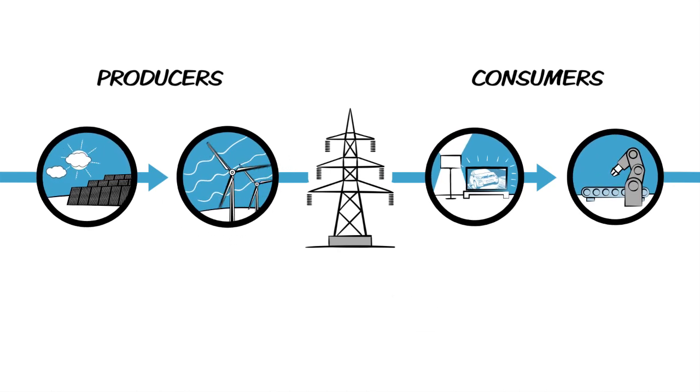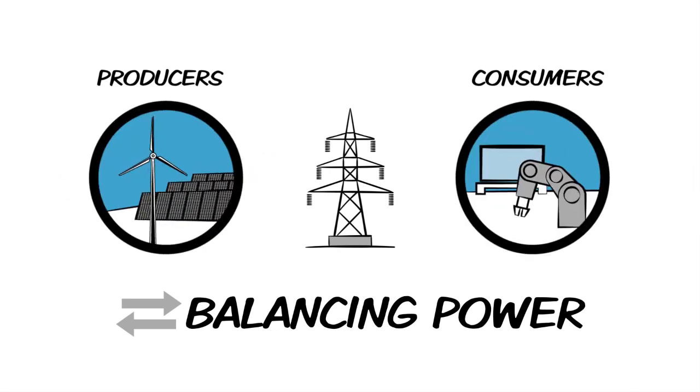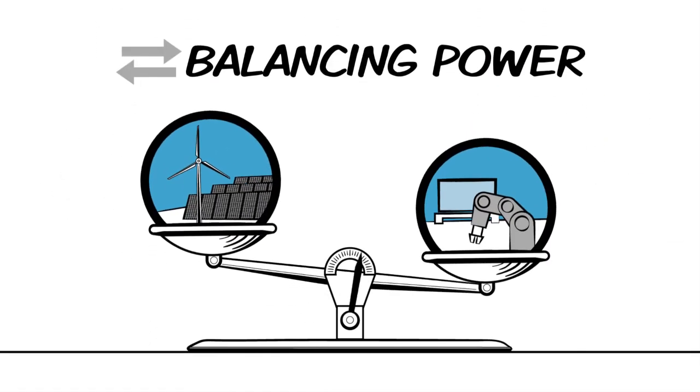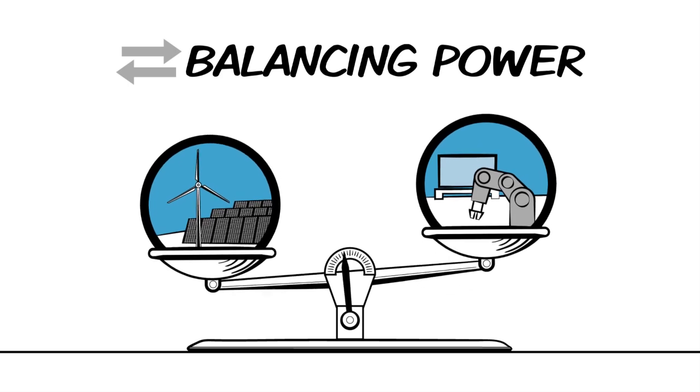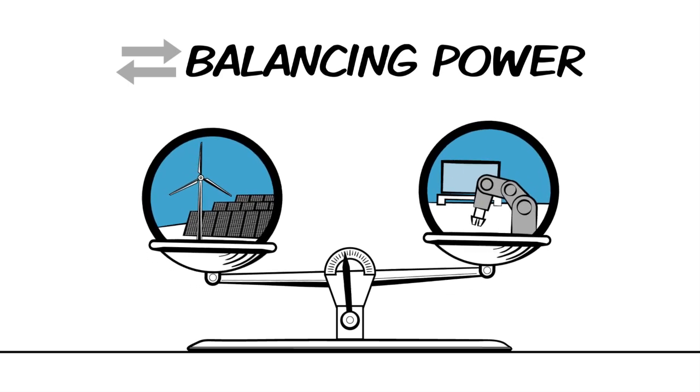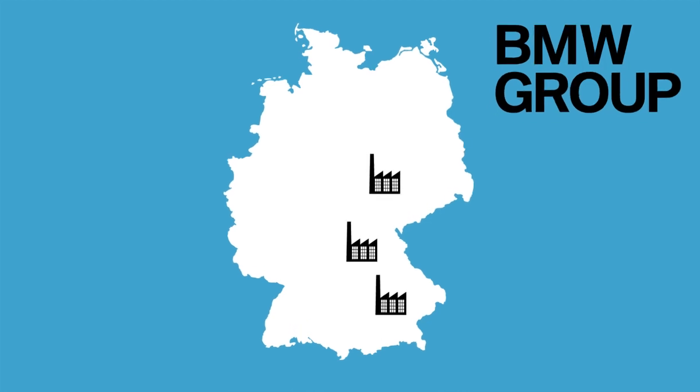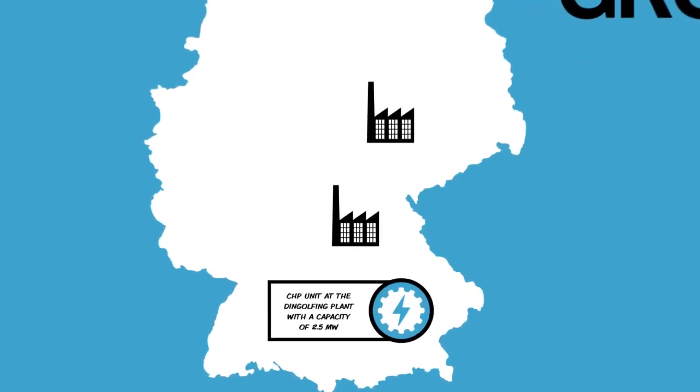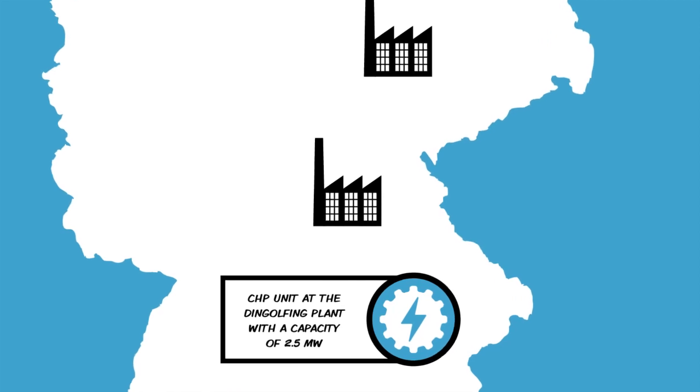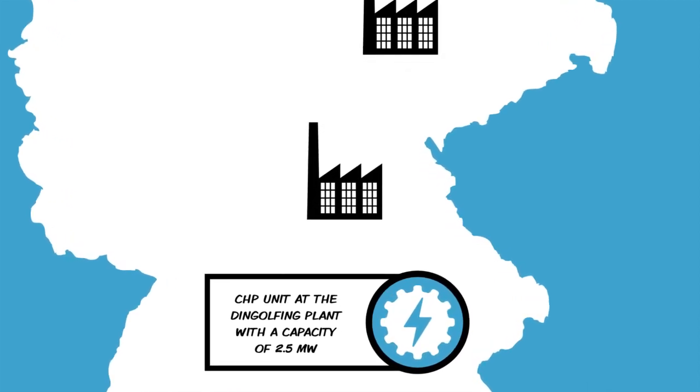With balancing power, the BMW Group contributes to ensuring optimal integration of energy from sustainable sources as well as a stable grid. At the BMW Group plants, this is done by intelligently networking and controlling energy assets which as a result have the flexibility to respond to demand in the public grid.